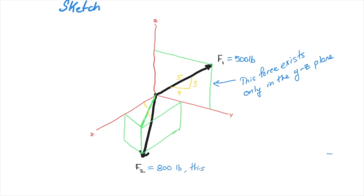Force 2 is a downward force of 800 pounds, and it exists in all three coordinate systems. So we have to have an i, j, and k position for this force to be completely resolved. We're also given angles: 30 degrees from the x-axis in the xy plane, and 45 degrees from the z-axis in the z plane.